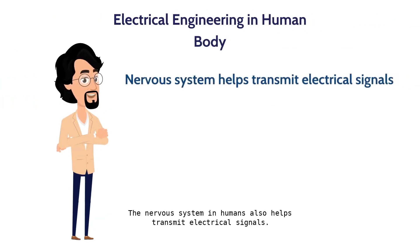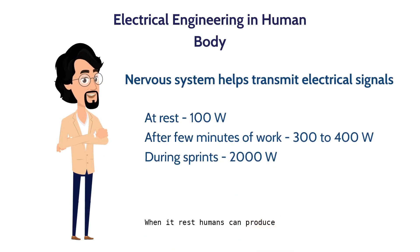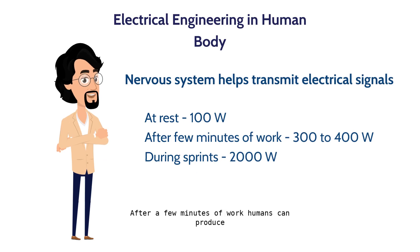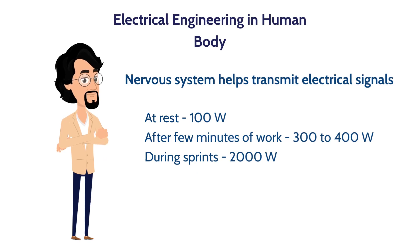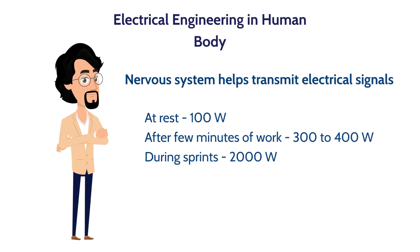The nervous system in humans also helps transmit electrical signals. When at rest, humans can produce 100 watts of power. After a few minutes of work, humans can produce 300 to 400 watts. During sprints, we are capable of producing 2000 watts. Engineers are researching techniques to produce electric power from humans, which we will see in the later part of the video.